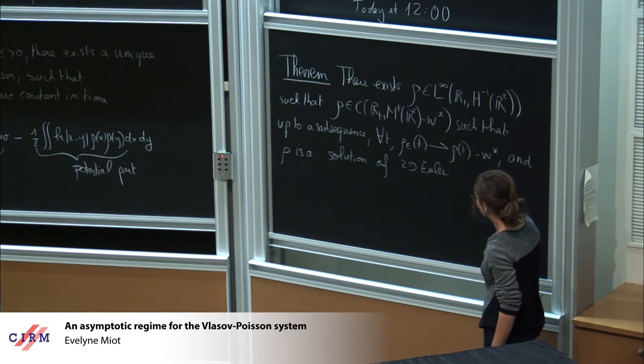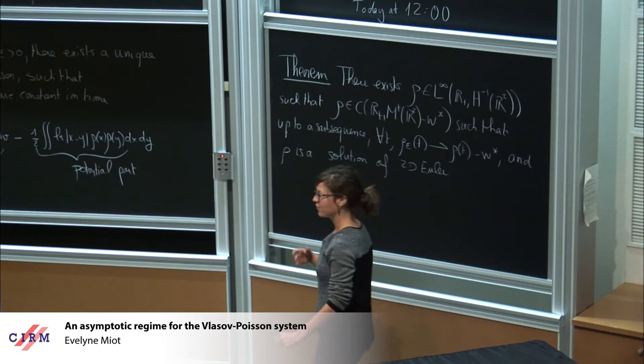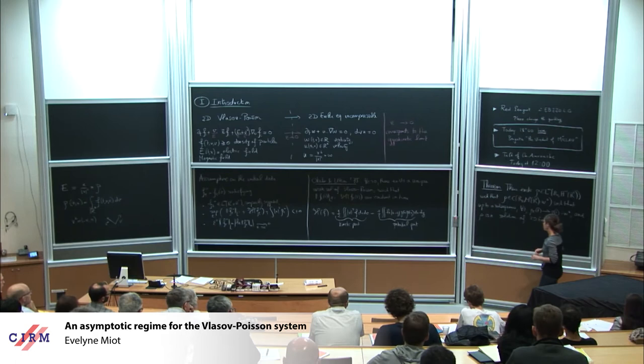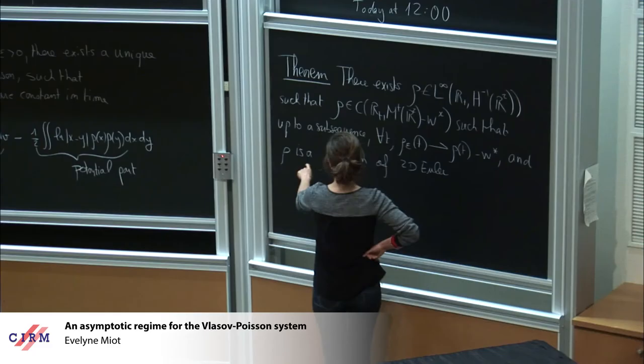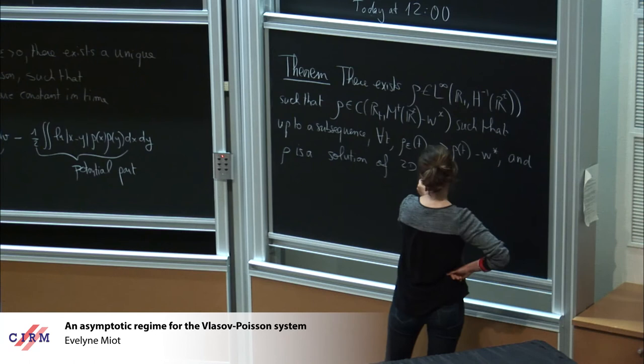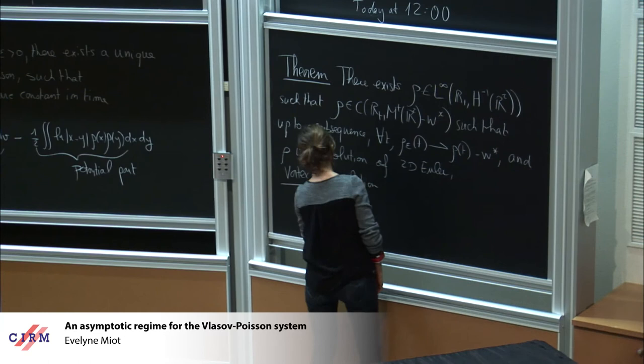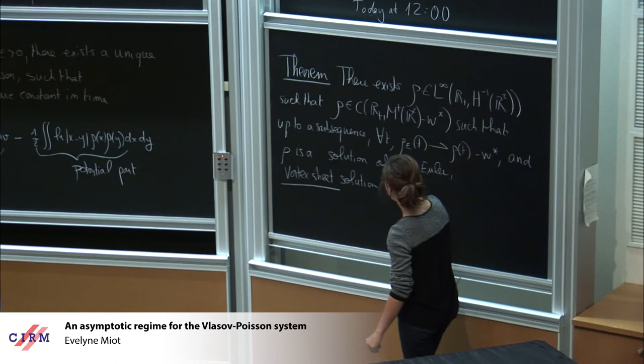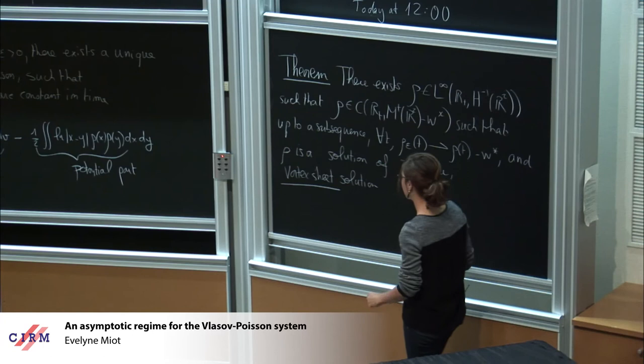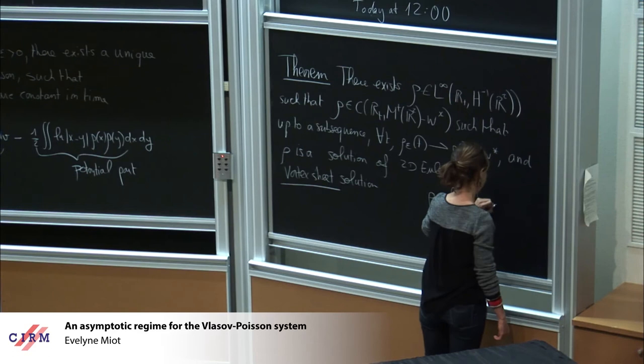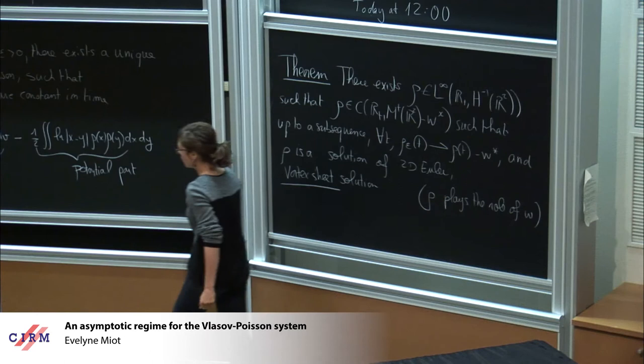Now I'm going to explain what a solution of 2D Euler is in this context. In the previous talk, you saw three different ways of defining a weak solution to the Euler equations in velocity formulation. But when you deal with the vorticity formulation, you can also define the things in a different way. Here I deal with a solution of 2D Euler which is a generalized solution, a vortex sheet solution. And just to be more precise, rho plays the role of omega in the equation I wrote before.